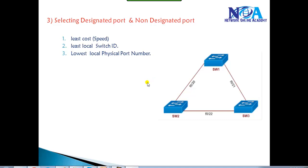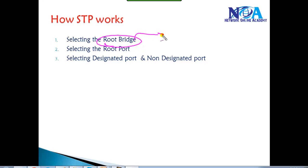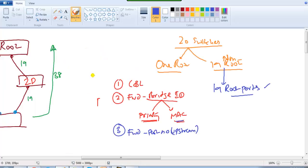In this section we continue about the spanning tree protocol. In the previous video we discussed the first two processes: selecting the root bridge, which is selected based on the best bridge ID, and selecting the root port, which is the shortest path to the root bridge. The root port is selected based on three conditions: first the cost, then if there's a tie, the forwarding bridge ID, and if still tied, the least port number of the upstream device.